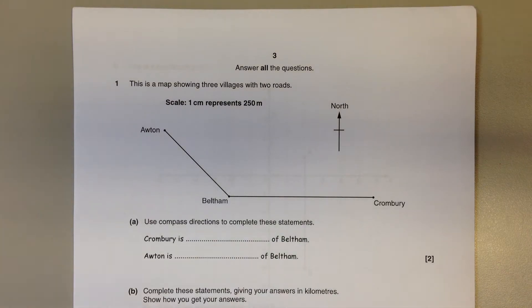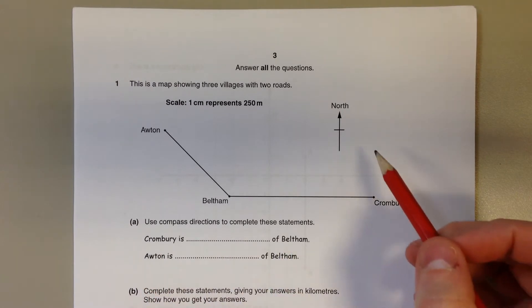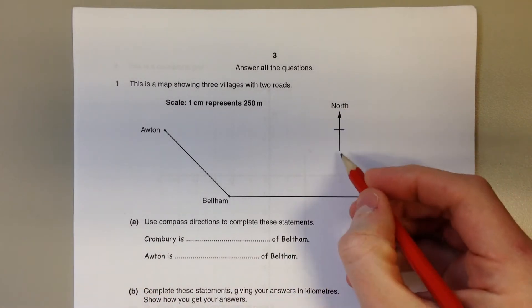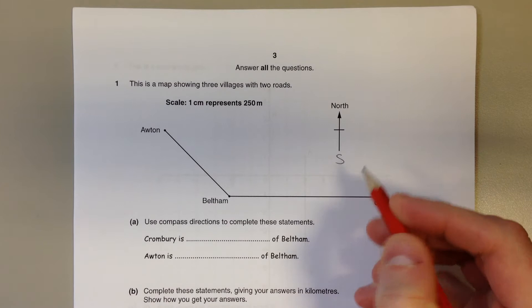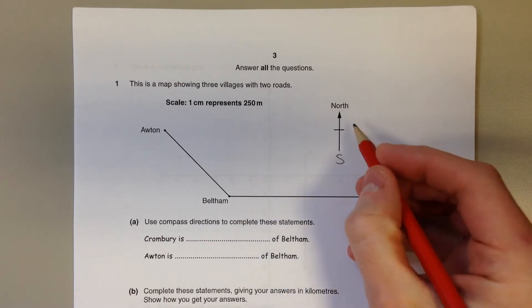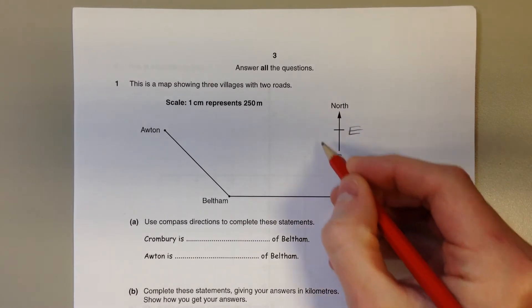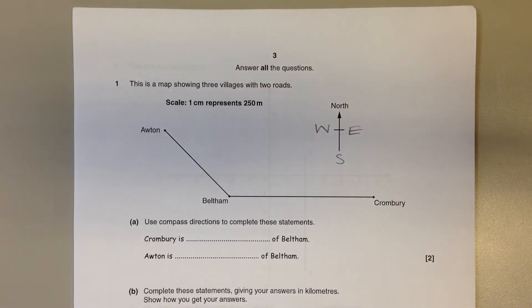Question number one. We've got a map with three villages and roads joining them. We've got a scale and we've got a compass. We need to use compass directions to complete these statements. We're going to fill out the rest of this compass. Opposite north is south, and then going around in a clockwise direction: north, east, south, and west.